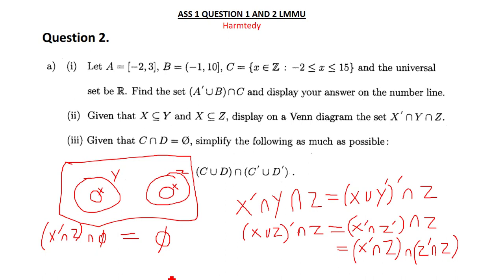This is how I would answer it, because the question wasn't clearly specified as to whether X, Y, and Z are all in one Venn diagram. So it might be answered differently by different people. Your question wasn't entirely clear, so let's move on to the next question.